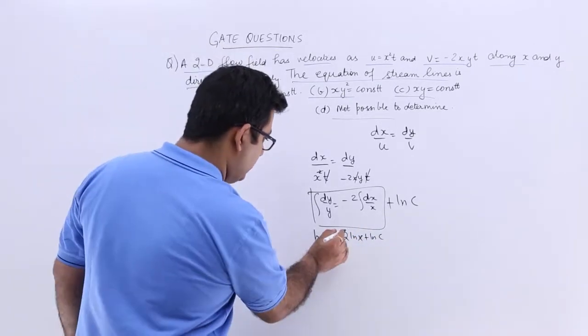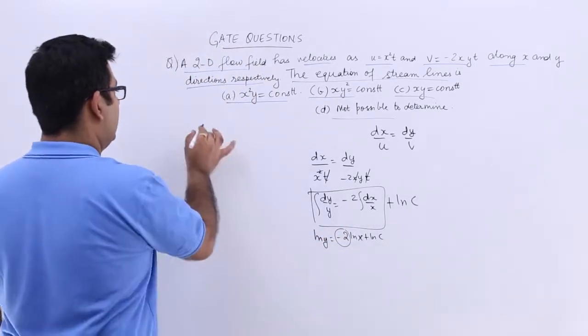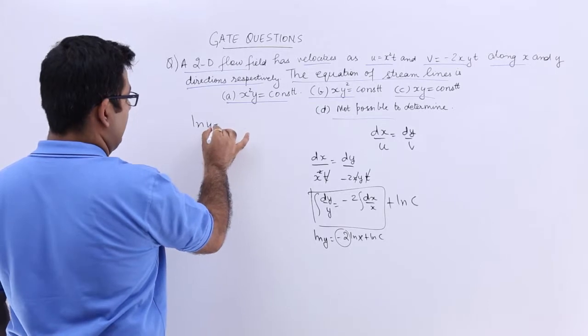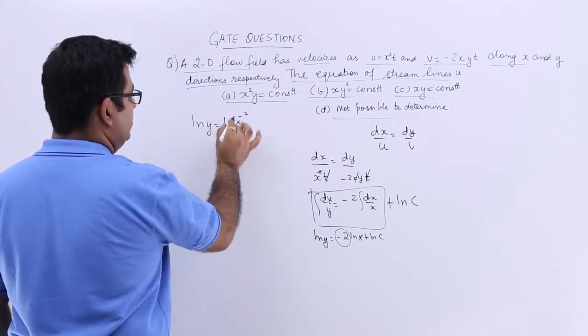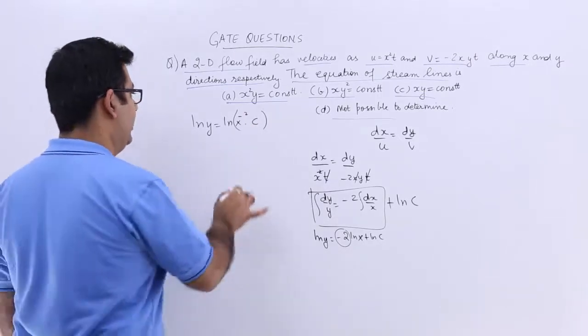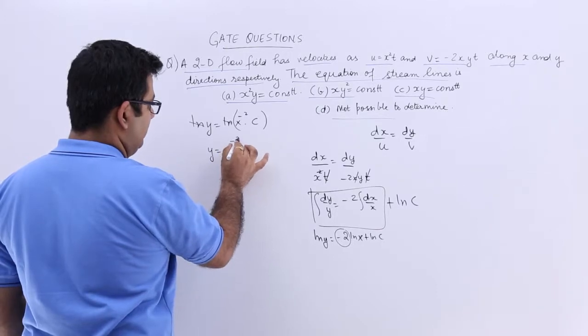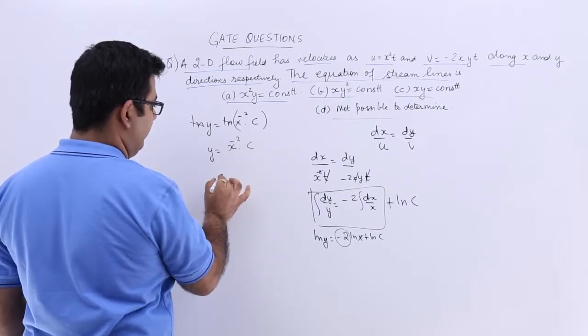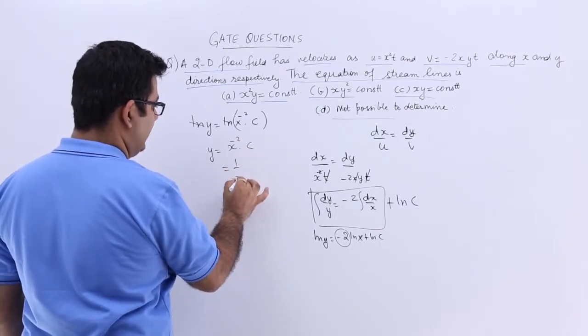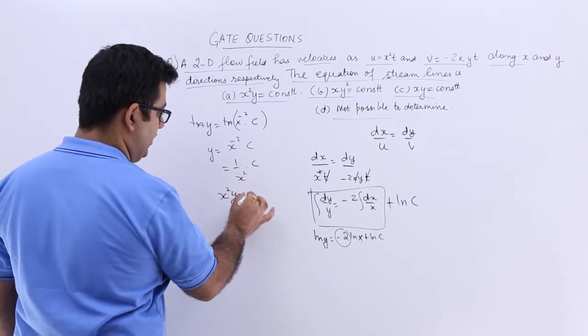So I can bring this minus 2 in the power of x and you will get log y is equal to log x to the power minus 2 into the constant. So now I can get rid of log and we will have x to the power minus 2 into c, which will give you 1 by x square into c, which means x square y is equal to c.